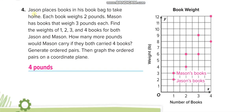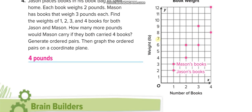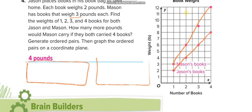Jason places books in his book bag. Each book weighs two pounds, so one book is two pounds, two books four pounds, three books six pounds, and four books eight pounds. This line is for Jason. For Mason, each book weighs three pounds: one book three pounds, two books six pounds, three books nine pounds, and four books twelve pounds. This line is for Mason. You can draw a table for Jason and for Mason.